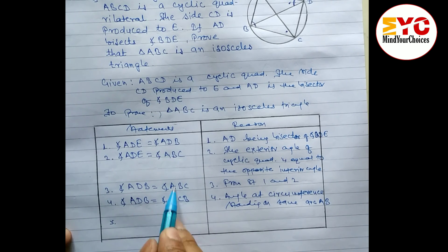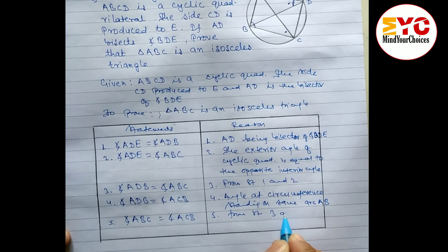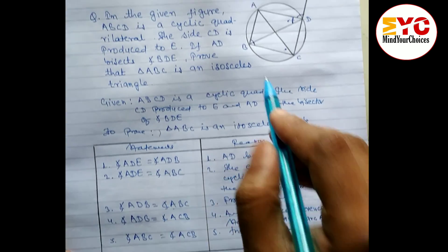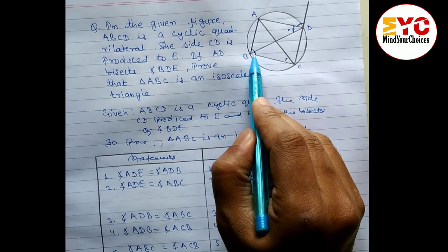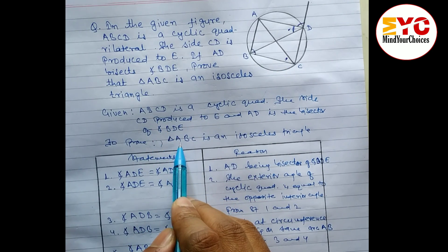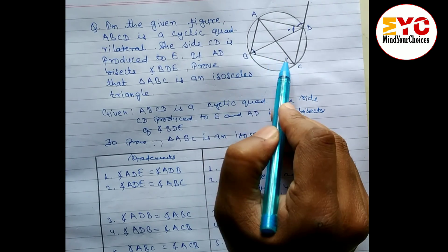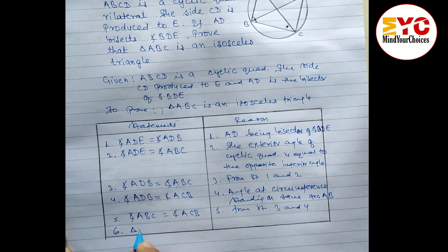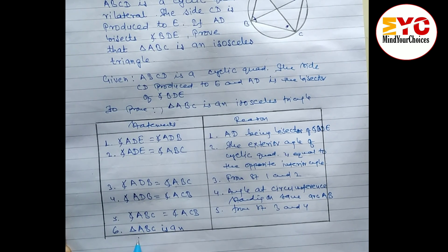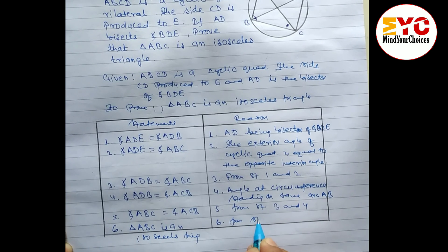Statement 5: from statements 3 and 4, since angle ADB equals both angle ABC and angle ACB, we get angle ABC equals angle ACB. These are the two base angles of triangle ABC, and they are equal. Reason: from statements 3 and 4.